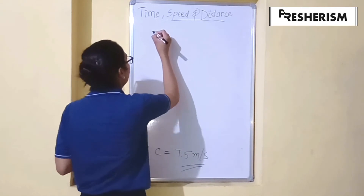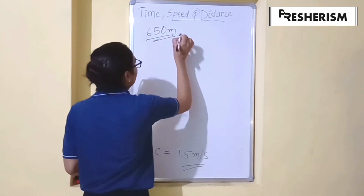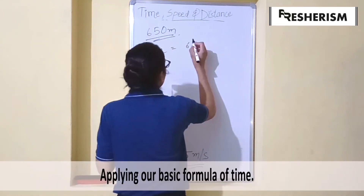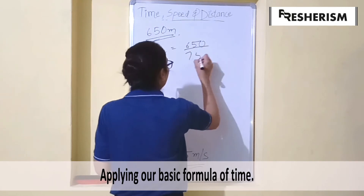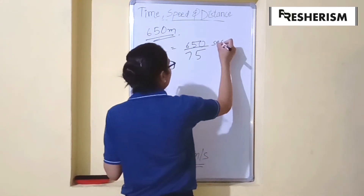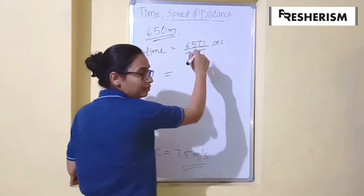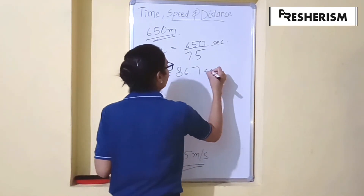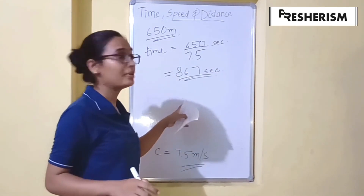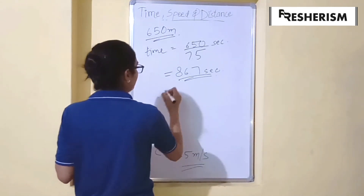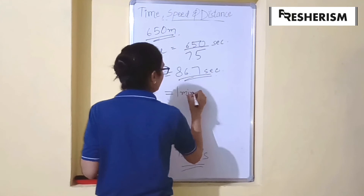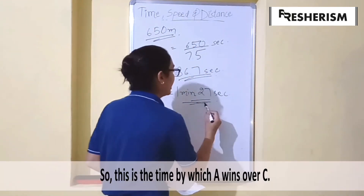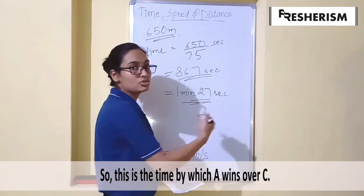C would have to cover an extra distance of 650 meters. Time would be equal to distance 650 divided by his speed, that is 7.5 meters per second. Dividing this, we get the answer to be 86.7 seconds. This is the time taken by C to complete the race, which is further equal to 1 minute 27 seconds. This is the time by which A wins over C.